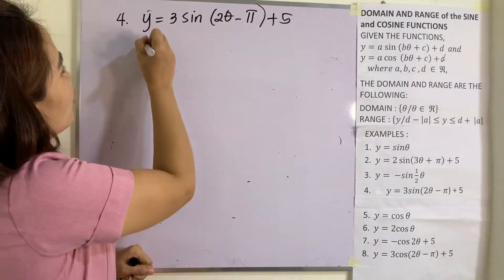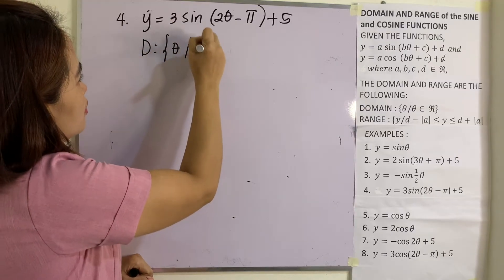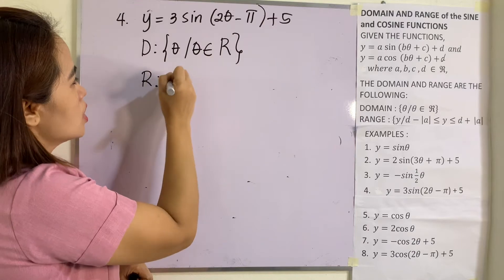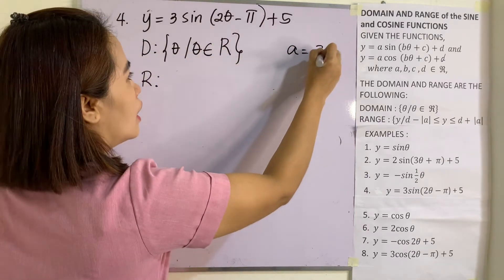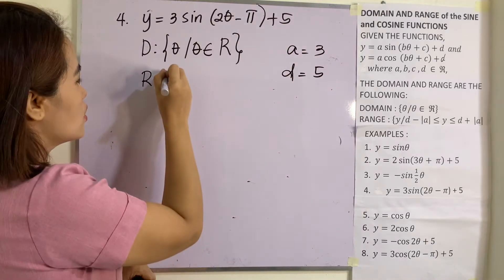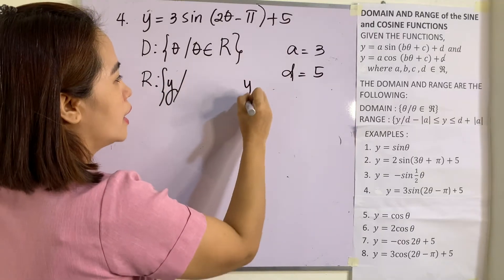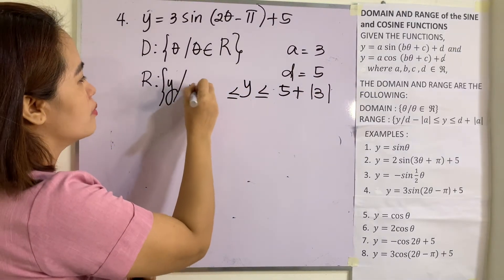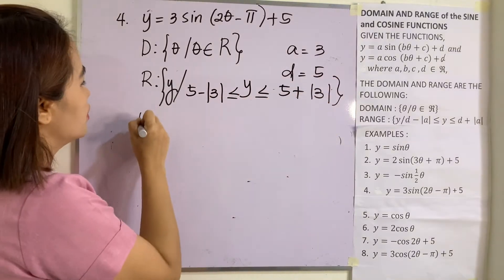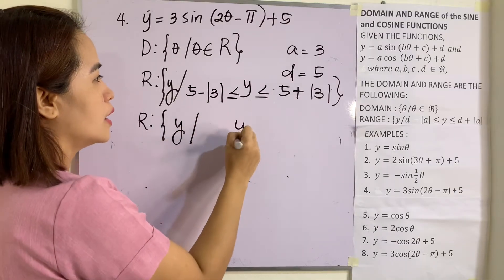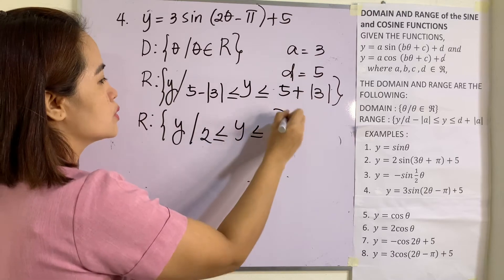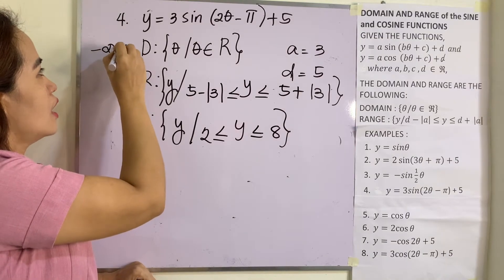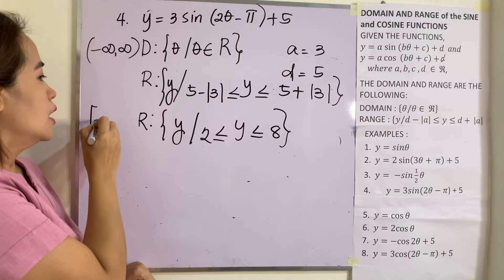Example 4: The domain is still the set of real numbers. Here a = 3 and d = 5. For the range: y ≤ 5 + |3| and y ≥ 5 − |3|, giving us y ≤ 8 and y ≥ 2. So the range is [2, 8]. In interval notation, the domain is (−∞, +∞) and the range is [2, 8].